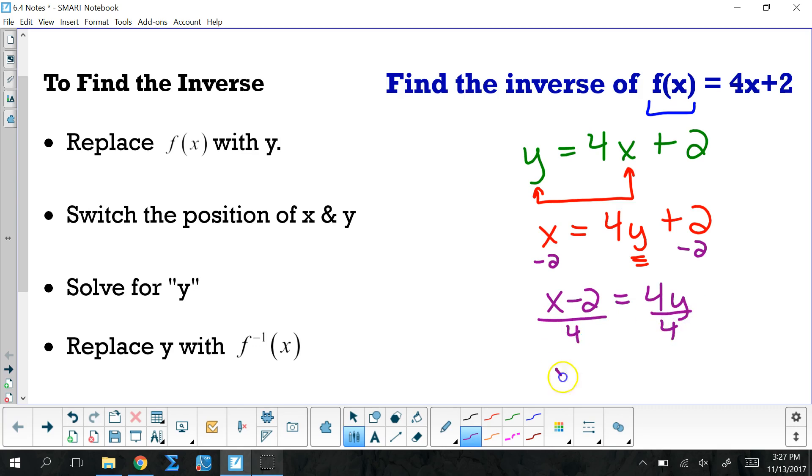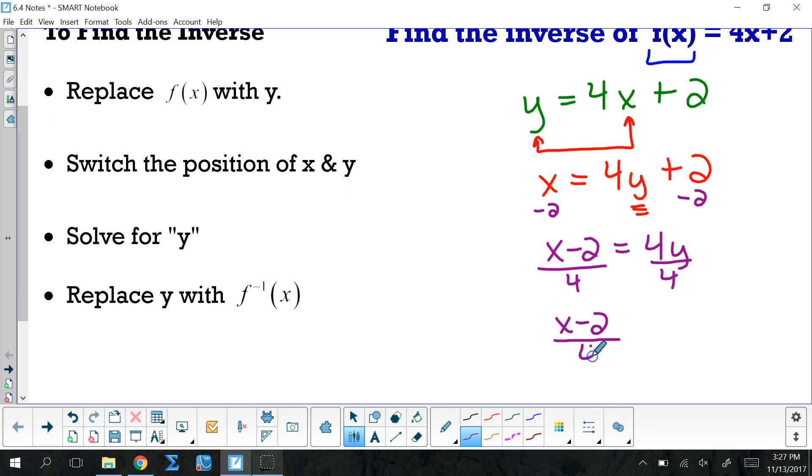That gives me x minus 2 divided by 4 is equal to y.